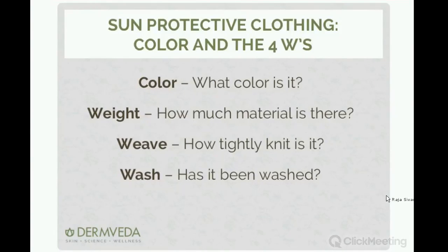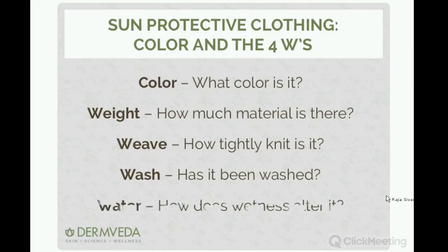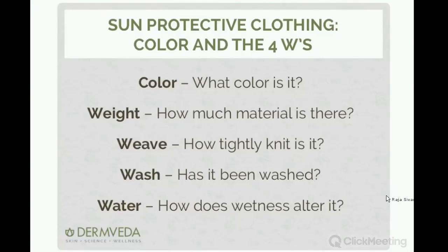When clothing shrinks after washing, the tighter weave means less ultraviolet can come through. Then, finally, there's what happens when your clothing gets wet. Many of us will send children out or go into the pool or beach surf wearing a t-shirt, hoping it gives extra protection when snorkeling or swimming. It's important to understand whether there's a better color to pick and how wetness changes the way clothes protect you.